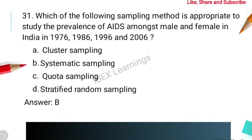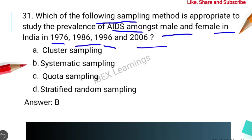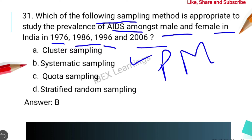Hello students, today we are going to solve some more problems from research methodology. The first question is: which of the following sampling methods is appropriate to study the prevalence of AIDS among female and male in India in 1976, 1986, 1996, and 2006? The correct answer is systematic sampling. Systematic sampling is a probability sampling method where the researcher selects members of the population at a regular interval — here, a 10-year interval. The correct answer is option B.